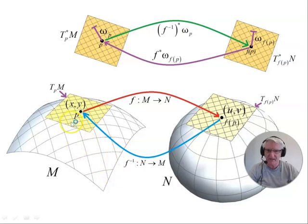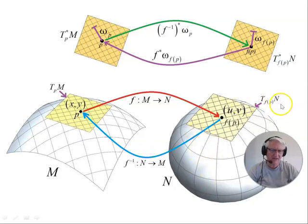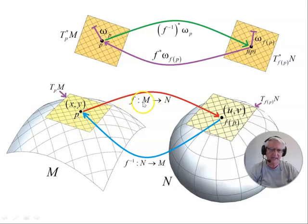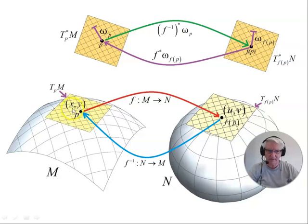Let's have a look at our manifold M. We have a point P on the manifold, and a tangent space to the point P on the manifold — the tangent space to M at the point P. On this manifold we're going to use coordinates XY. Over here we have manifold N, with the tangent space to the manifold N at the point F of P. F of P is the image of the point P under the map F that takes points on M and maps them to points on N. The inverse map goes the other way. In these tangent spaces vectors exist. We're going to have coordinates XY in the tangent space on M, and coordinates UV in the tangent space on N.